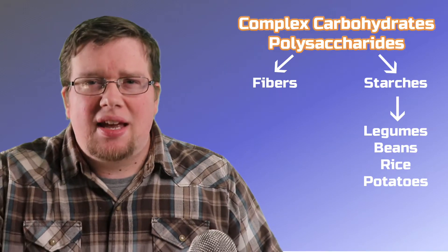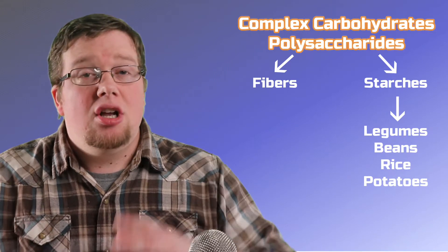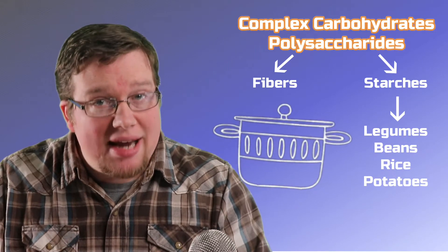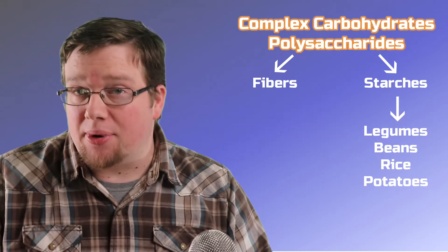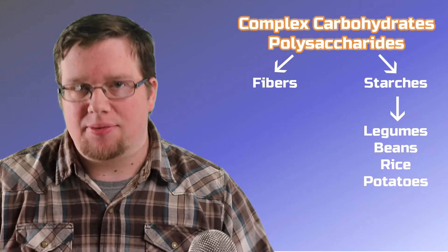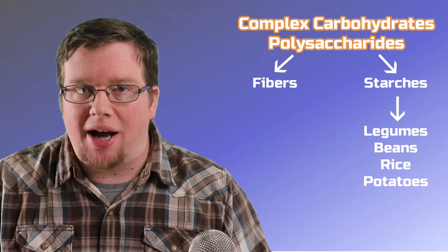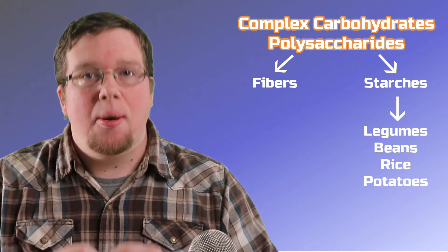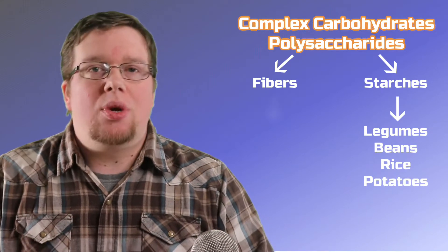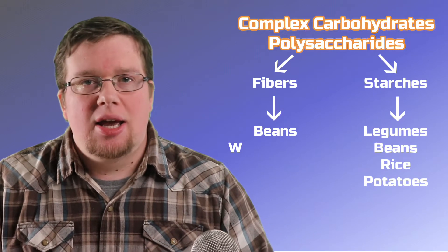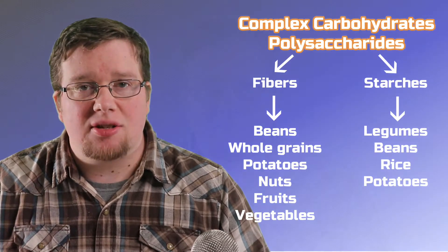The human digestive system has a very difficult time breaking down raw starches. However, when we cook them, it actually helps break them down and makes them easier to digest. Now, fibers are considered very complex types of carbohydrates. In fact, they're so complex the human body cannot actually break down fibers, but they're still very important to our health. We get fibers from foods such as beans, whole grains, potatoes, nuts, and some fruits and vegetables.